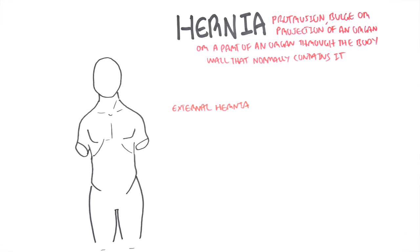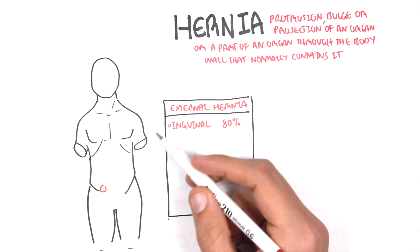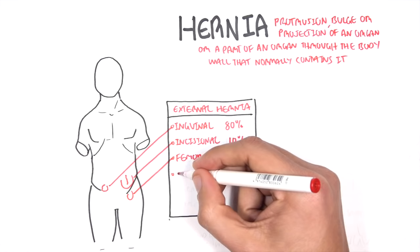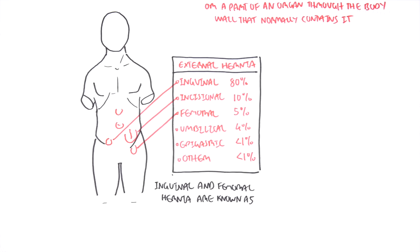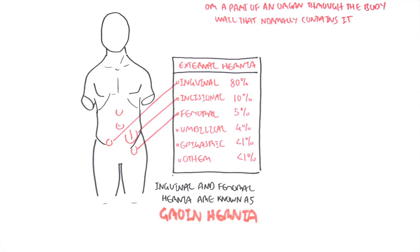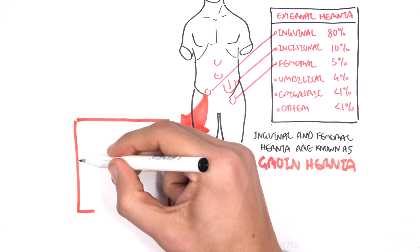External hernias include inguinal hernia, which is the most common at 80%, then incisional hernia at 10%, femoral hernia at 5%, umbilical hernia at 4%, epigastric hernia at less than 1%, and then others. The inguinal hernia and the femoral hernia are known together as groin hernias because they occur around the groin area. We will focus on inguinal hernia as it is the most common.